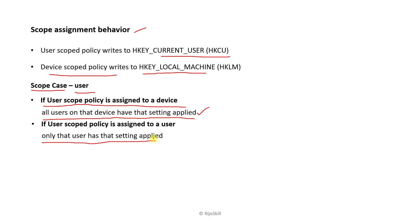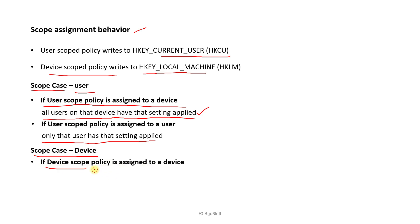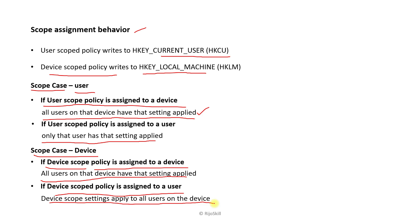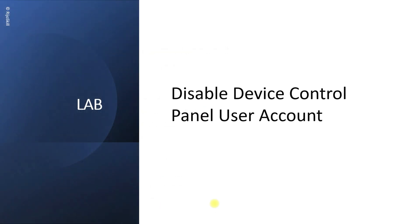Scope case three — device scope policy assigned to a device: all users on that device have the setting applied. Scope case four — device scope policy assigned to a user: the device scope setting is applied to all users on that device. Whatever user uses that device will get all the configuration. So there are two types of scope assignment behavior: user scope and device scope.